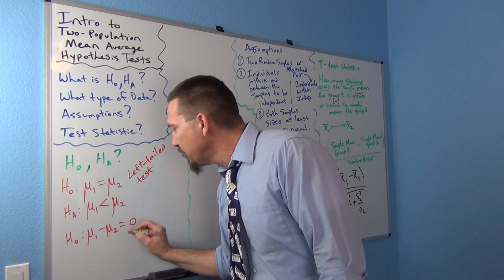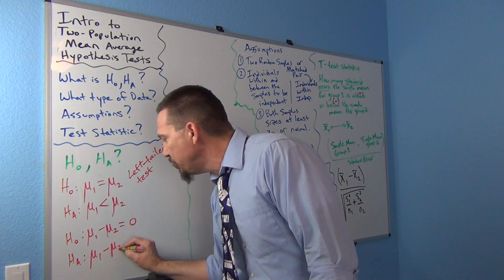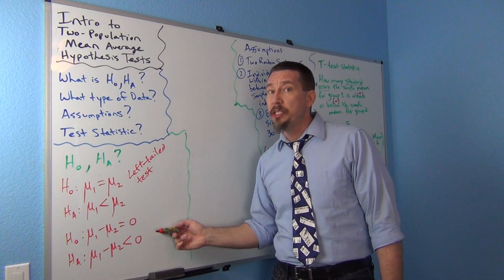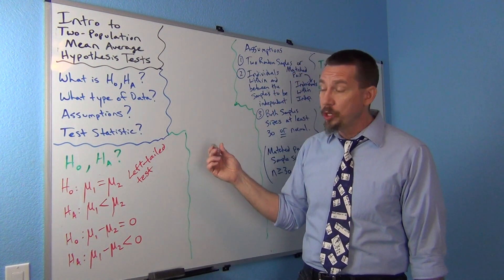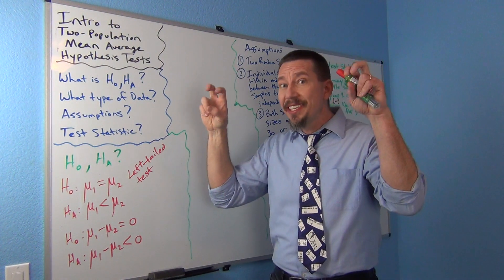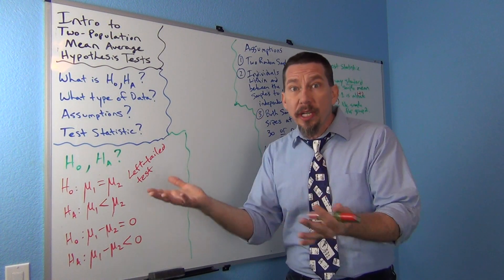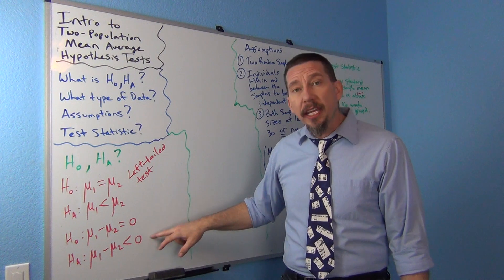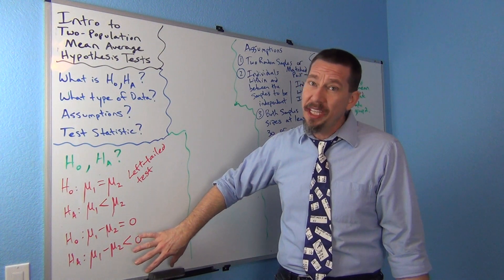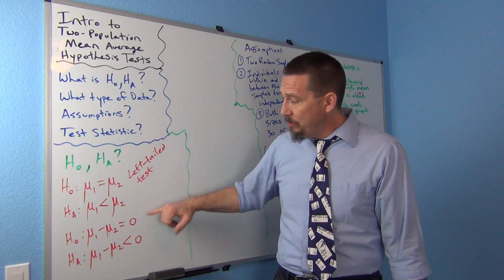You could write the null as mu1 minus mu2 equals 0, and the alternative as mu1 minus mu2 less than 0. Zero is a really important number in two population tests. Many computer programs will ask for the hypothesized difference and already have 0 entered, because they write the hypothesis in this difference form. Both ways are equivalent — they mean the same thing.